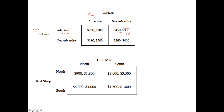Now let's look at what Blue Mart does in response. If Red Shop goes North, cover the bottom two boxes and consider only the top payoffs — 3,500 is greater than 1,800. If Red Shop positions in the South, Blue Mart is faced with 4,000 versus 1,000 and chooses 4,000. What's interesting here is that we've actually identified two different Nash Equilibria.